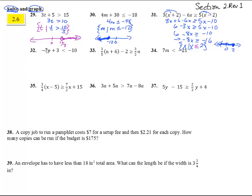Number 32. Negative 7p plus 3 is less than negative 10. Subtract 3 from both sides and we get negative 7p less than negative 13. Divide by a negative 7. Divide by a negative 7. Now, remember, this negative sign is what causes this guy to switch. So, we have p is greater than negative 13 over negative 7. The two negatives cancel, and we get 13 sevenths.